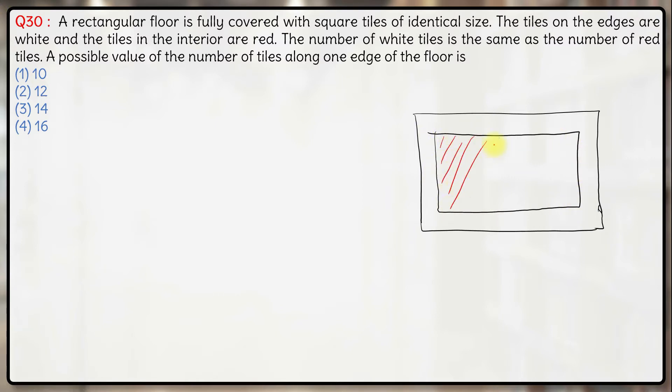So this is the red tiles and the edges are white tiles. The number of white tiles is same as the number of red tiles, a possible value of the number of tiles along one of the edges is how much.